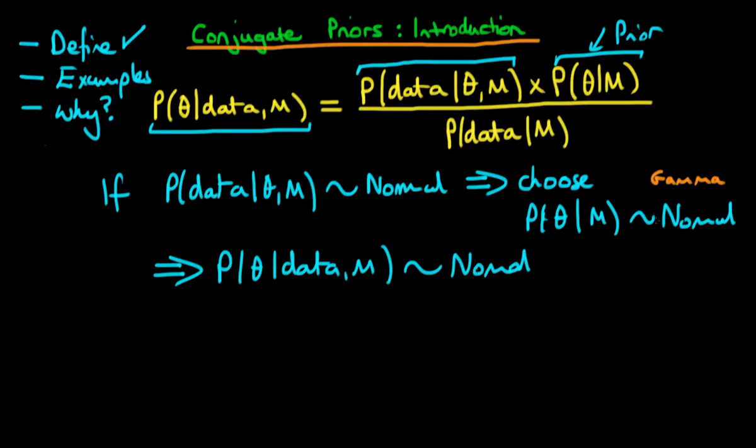So the idea is that if we choose our prior distribution in a particularly intelligent way, such that it is what we call conjugate to the likelihood, then it turns out that in that case of choosing a conjugate prior, the posterior has exactly the same form as the prior.